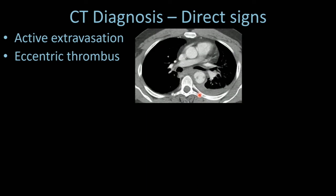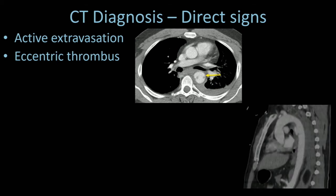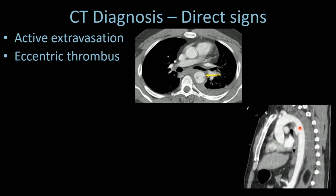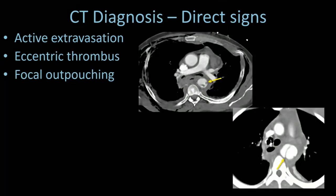This case shows what looks like the descending aorta has two lumens. Multiplanar reconstructions are helpful. You can see there's a clear focal outpouching from the descending aorta. I'm not calling it a pseudoaneurysm—that's intentional. Some are true pseudoaneurysms covered by aortic wall, others are complete contained transections, so we call them focal outpouchings.